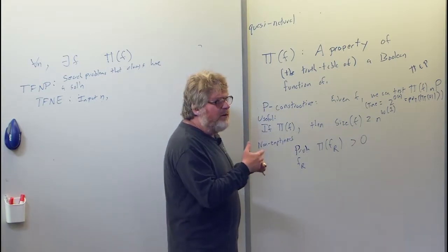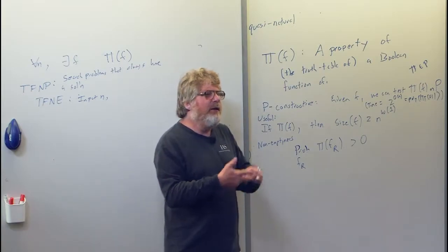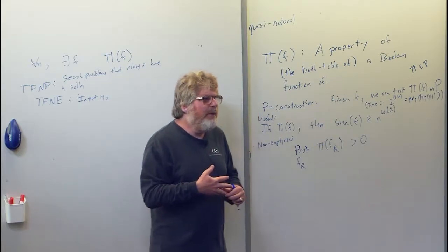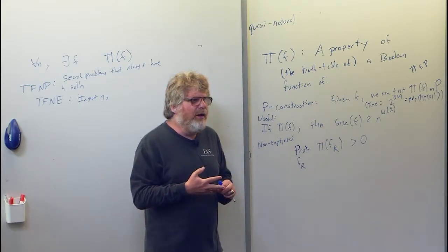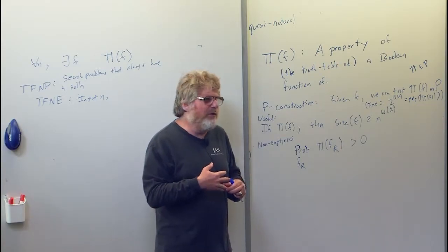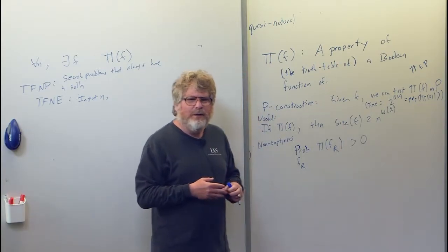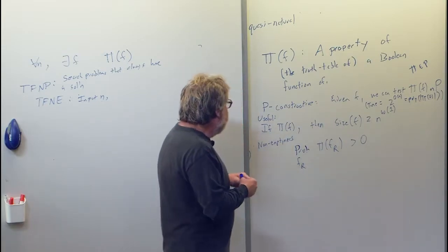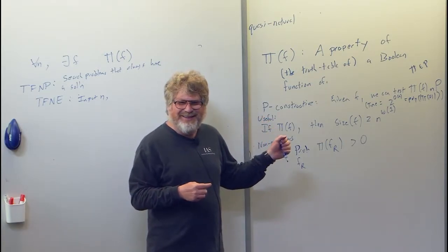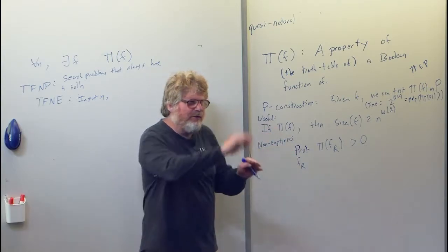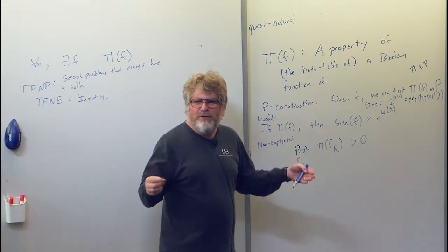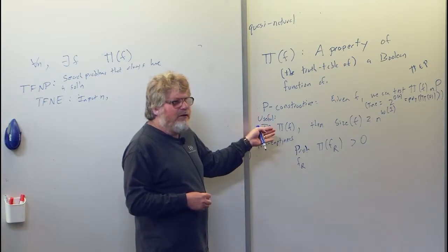The existence of a natural property would say: here's something I know exists by the probabilistic method, but there is no way of constructing them — not that I don't know how, but there's no simple construction, period. If we drop largeness, instead of proving existence by the probabilistic method, we have a class of objects we know exists, but still no simple construction.